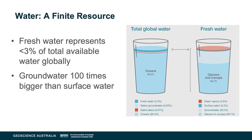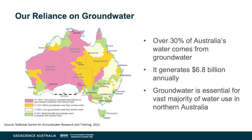Let us look at water availability. The picture on the left-hand slide clearly shows that fresh water represents less than 3% of total available water globally. However, when we look at the picture on the right-hand side, it clearly shows that groundwater is 100 times bigger than surface water. We need to understand our reliance on groundwater in Australia — it represents over 30% of Australia's water supply.